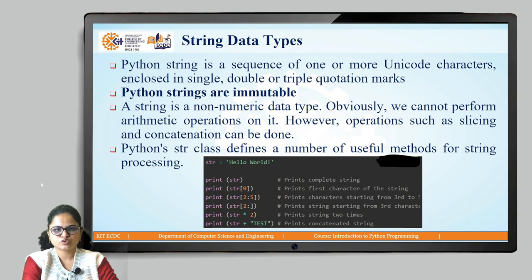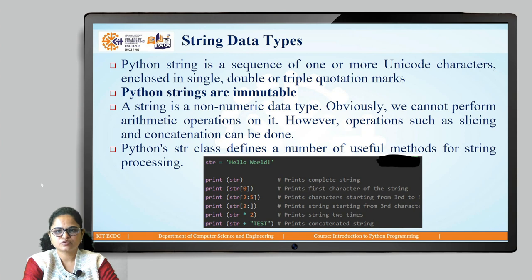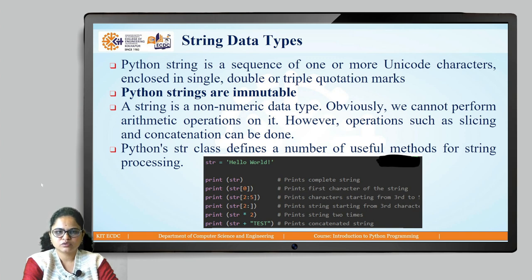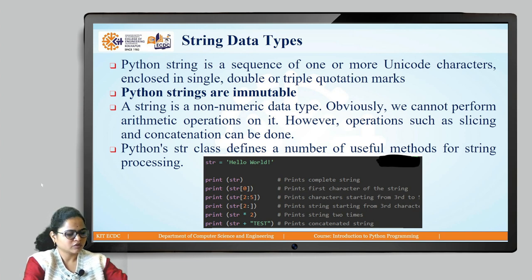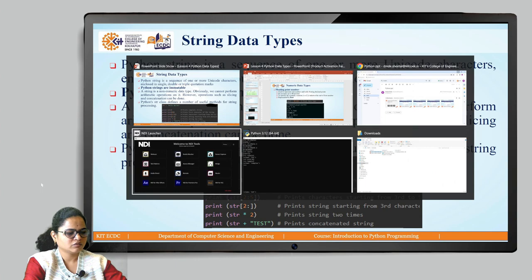The str class is used to define string data type variables and defines a number of useful methods for string processing, which we will see in the later part of this course. Remember that a string is a sequence of Unicode characters enclosed in either single quote, double quote, or triple quote, and strings are immutable. Concatenation and slicing operations can be performed on strings.